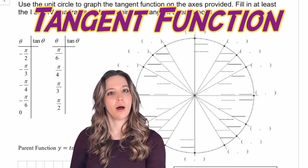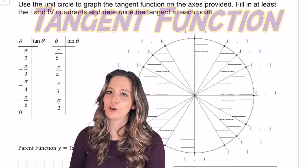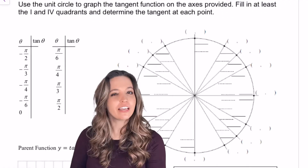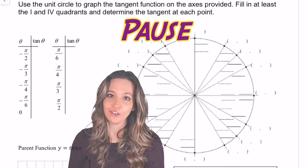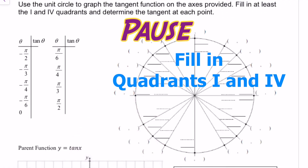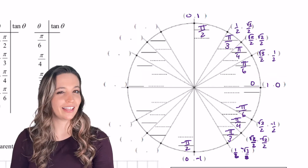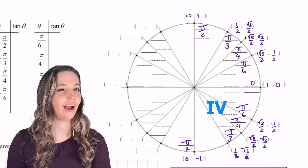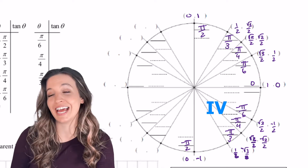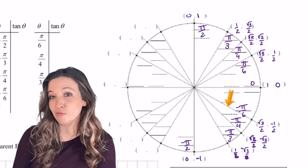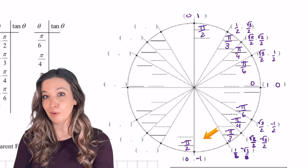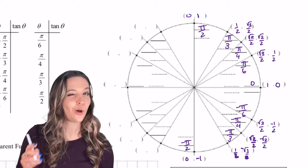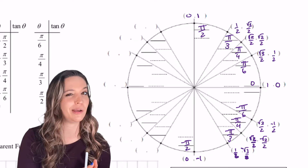Graphing the tangent function. Pause the video for a moment and fill in quadrant 1 and 4 of the unit circle. Notice when I labeled quadrant 4, I labeled it with the negative coterminal angles: negative pi over 6, negative pi over 4, negative pi over 3, and negative pi over 2. We're going to see why in a minute.